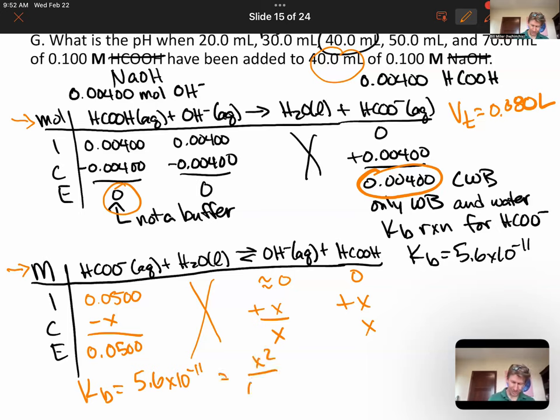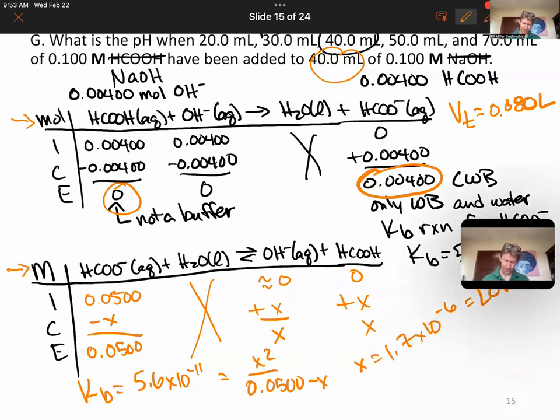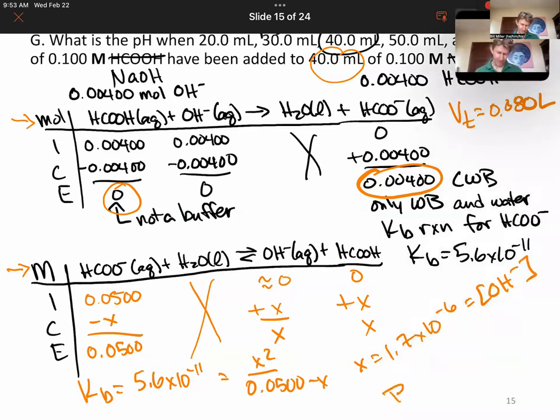Kb equals 5.6 times 10 to the minus 11. It's going to equal X squared over 0.0500 minus X. And if you solve for X, 5.6 times 10 to the minus 11 times 0.05 equals square root. I get 1.7 times 10 to the minus 6, which is our concentration of hydroxide. And then I can find pOH. Minus log 1.7 times 10 to the minus 6, I get 5.77.